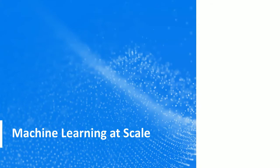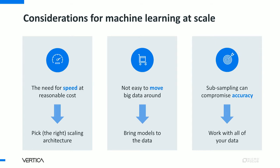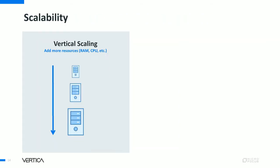When we say machine learning at scale, there are a few important considerations. First, we want speed at a reasonable cost, so picking the right scaling architecture matters. Second, it's not easy to move big data around — at really large scale, you'd want to bring models to the data rather than move data to the tools. Third, subsampling can compromise accuracy; many tools force you to take smaller samples because they can only handle so much data, but working with all your data is critical.